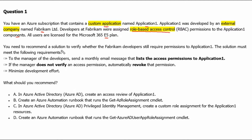You need to recommend a solution to verify whether the Fabricam developers still require permission to Application 1. The solution must meet the following requirements: send a monthly email message to the manager of the developers that lists the access permissions to Application 1. If the manager does not verify an access permission, automatically revoke that permission. Minimize development effort.